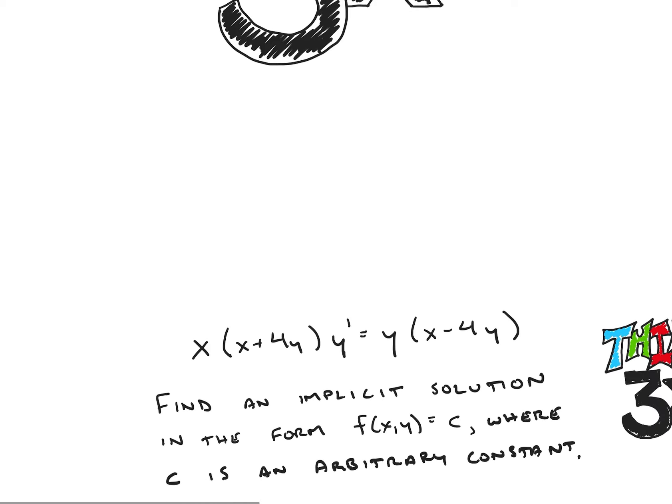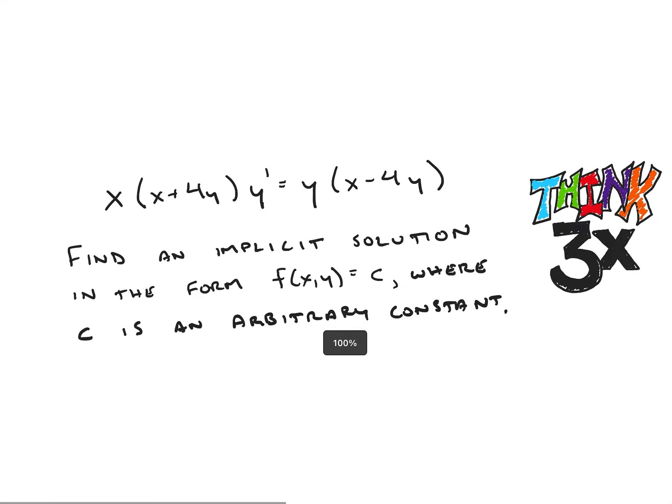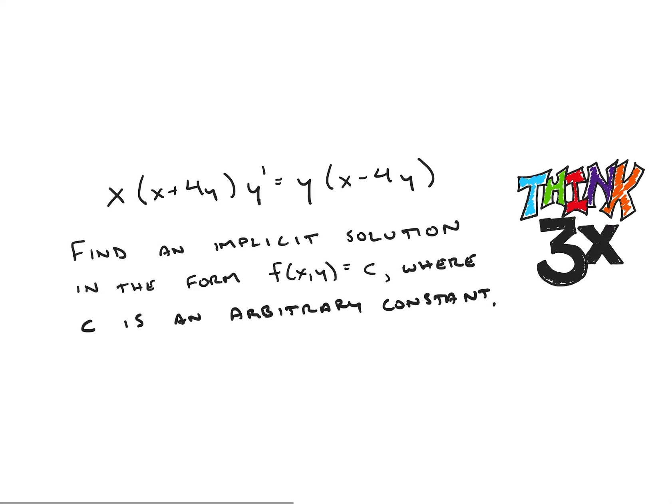So if we look down here, we can see that our problem is a differential equation. So x times, in parentheses, x plus 4y times the derivative of y with respect to x is equal to y times x minus 4y.